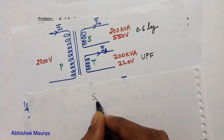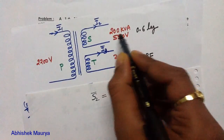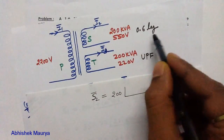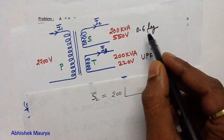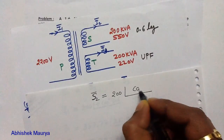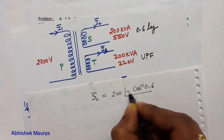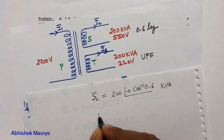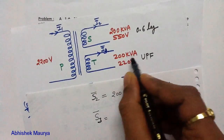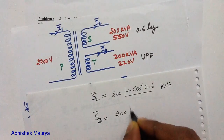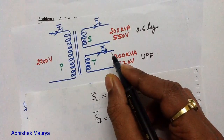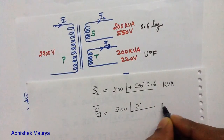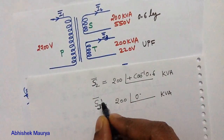The complex power output at the secondary winding S2 is written as 200 kVA at angle cos⁻¹(0.6), because the current is 0.6 power factor lagging — so we write a positive angle here. The complex power output at the tertiary winding S3 is 200 kVA at angle 0°, because the current is at unity power factor.